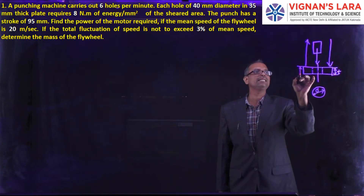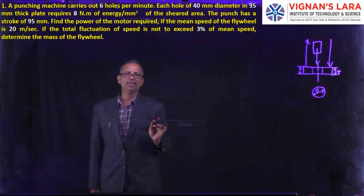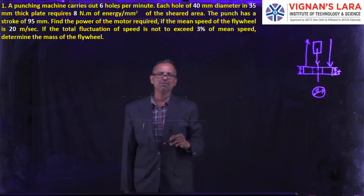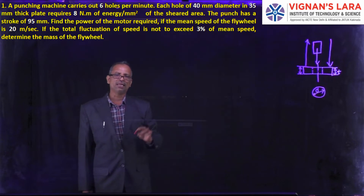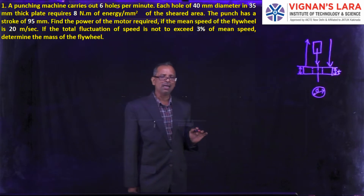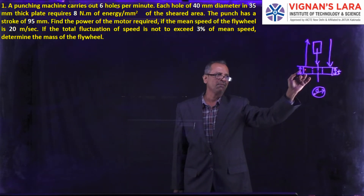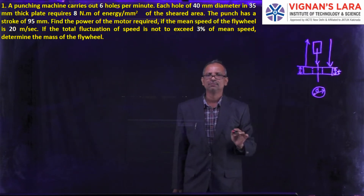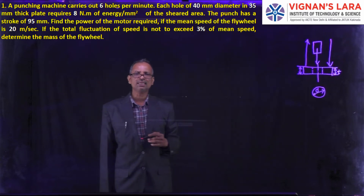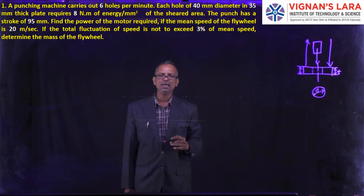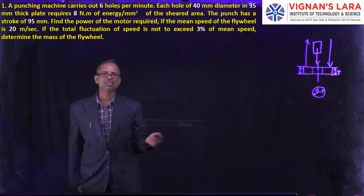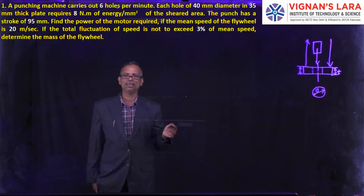When the punch strikes the thickness, more energy is absorbed during that period. This punch is driven by a mechanism to which a flywheel is connected, and that flywheel is connected to a motor. The motor delivers power at a constant magnitude, but more power is needed during the striking and less when not striking. During idle time, excess energy is stored in the flywheel, and when more energy is required during punching, the flywheel feeds that energy to the punch.